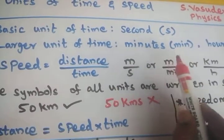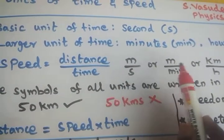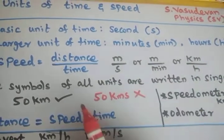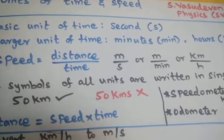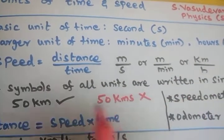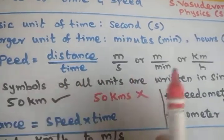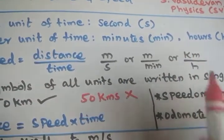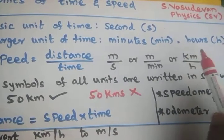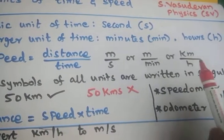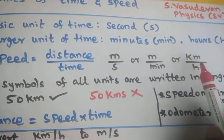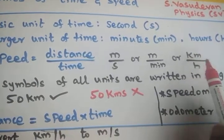The distance may be measured in meters and the time may be in minutes, or even the time can be measured in hours. So for cars, buses, and lorries, the speed can be expressed in kilometers per hour. For example, 10 kilometers per hour means the car is moving 10 kilometers in one hour.